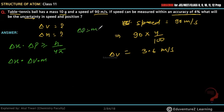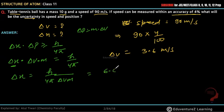Delta X equals H by 4 pi into delta V into M. Substituting the values: 6.626 into 10 to the power minus 34 joule seconds by 4 into 3.14 into delta V of 3.6 into mass.